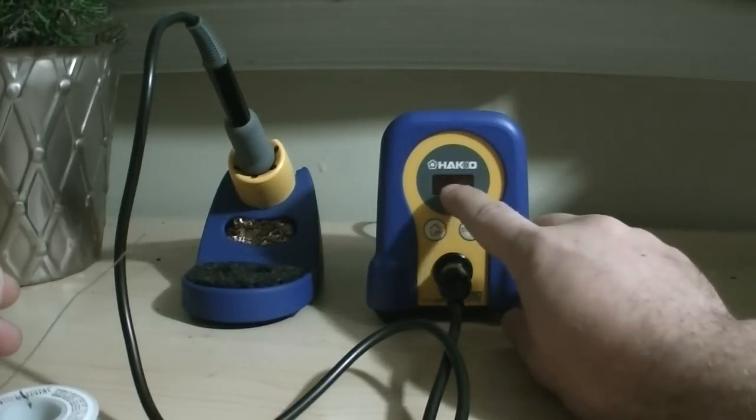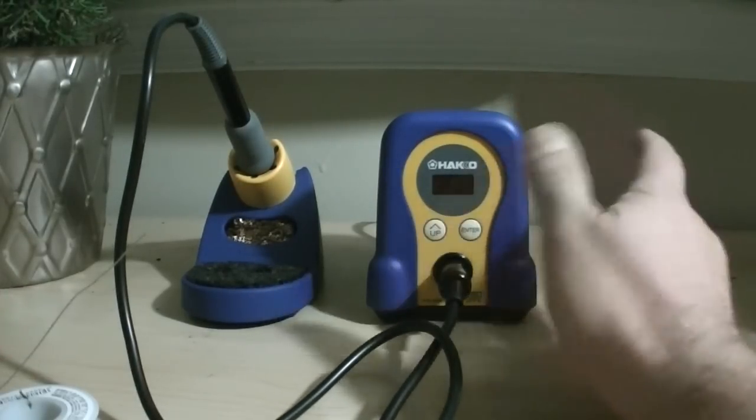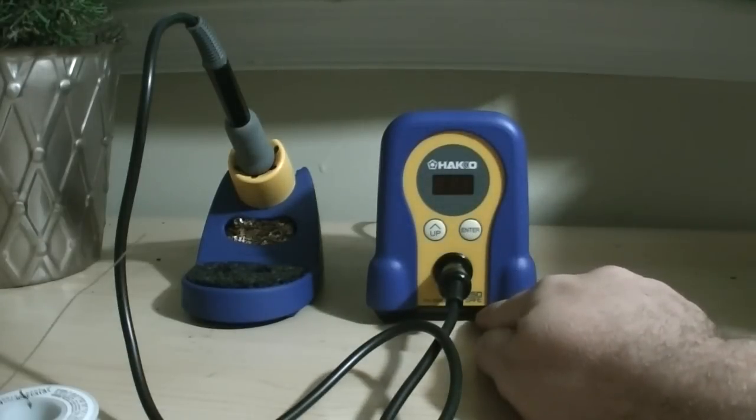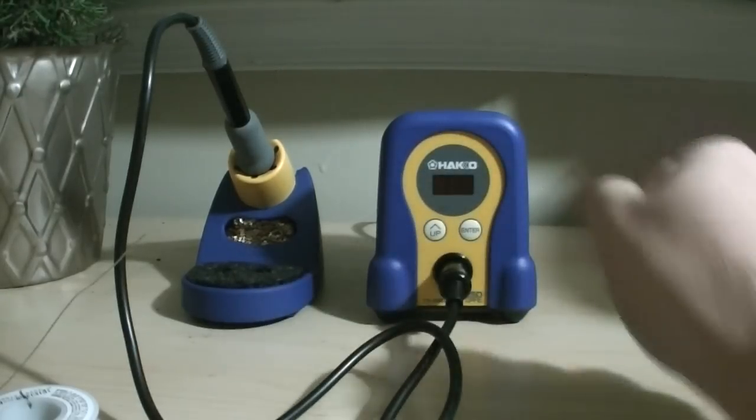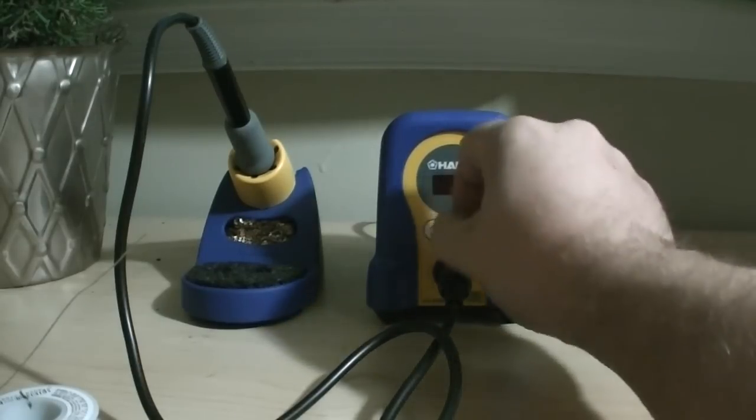For the older machine, if you had to adjust the temperature, you had a tool down below it that you'd put in the back, and it would adjust what it thought was the correct temperature. Well that's gone, because it's all digital now.